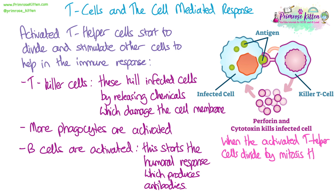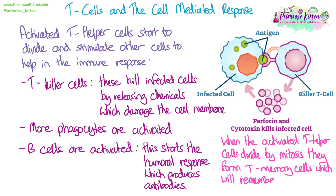When the T helper cells are activated they also divide by mitosis and form T memory cells, which work very similarly to B memory cells. They will stay around in the blood, but they can also stay in the thymus gland, so they can remember that antigen and be re-stimulated quite quickly if you get reinfected.